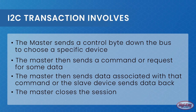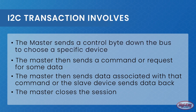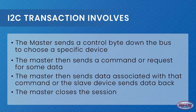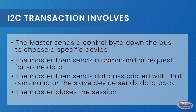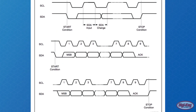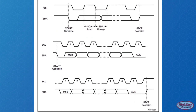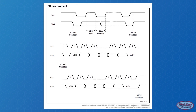An I2C transaction involves the following steps: the master sends a control byte down the bus to choose a specific device; the master then sends a command or request for some data; the master then sends data associated with that command, or the slave device sends data back; and finally the master closes the session. Each message sent down the bus is typically 11 bits long, which includes an 8-bit data packet, a start bit, a stop bit, and an acknowledge bit.